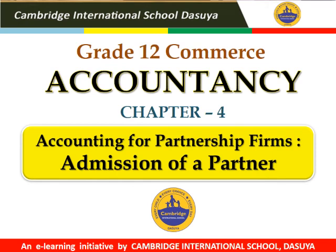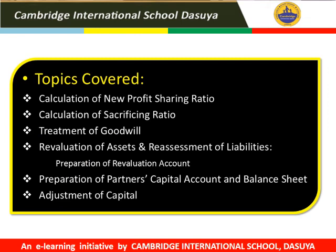Dear students, now we will start Chapter No. 4, i.e. Accounting for Partnership Firm, Admission of a Partner. In this chapter, we will cover the topics like calculation of new profit sharing ratio, calculation of sacrificing ratio, treatment of goodwill, revaluation of assets and reassessment of liabilities, preparation of partners capital account and balance sheet, and the last topic is adjustment of capital.